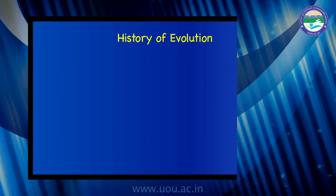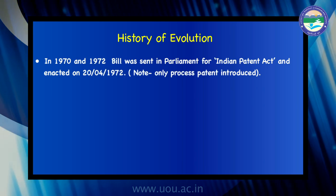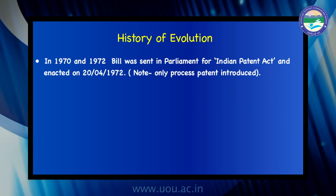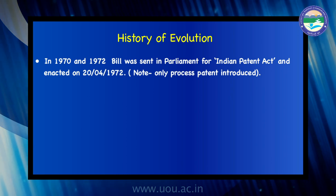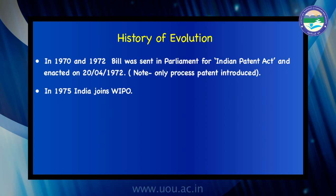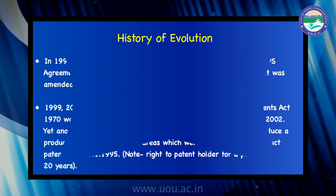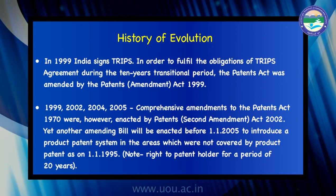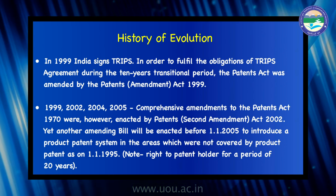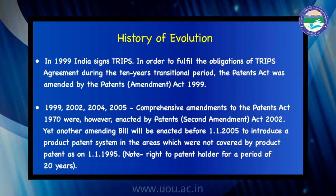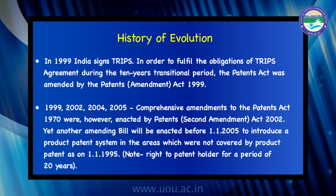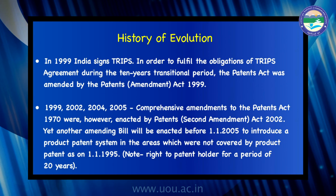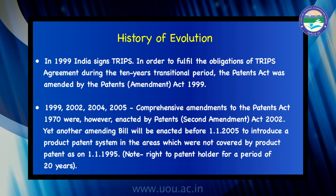In 1970, the Bill was sent to Parliament for the Indian Patent Act and enacted on 24th April 1972. It is notable that only process patents were introduced in the 1970 Act. In 1975, India joined WIPO. The 1970 Act made changes to the term of patent — earlier it was 14 years — and compulsory licensing was also introduced by the 1970 Act. This Act was amended three times: in 1992, 2002, and 2005.